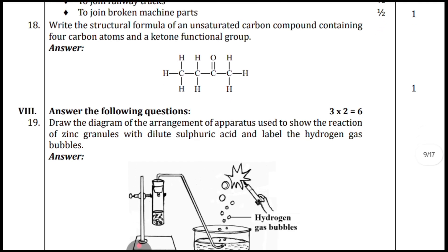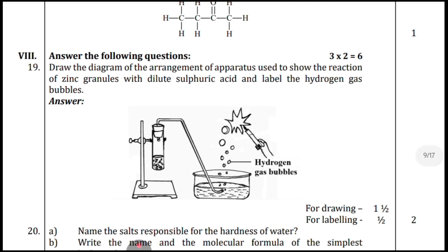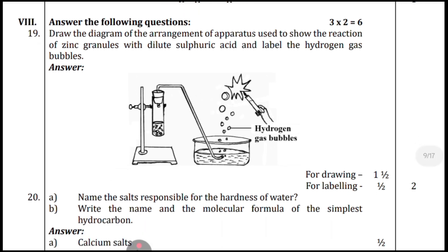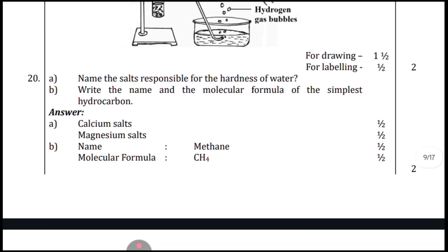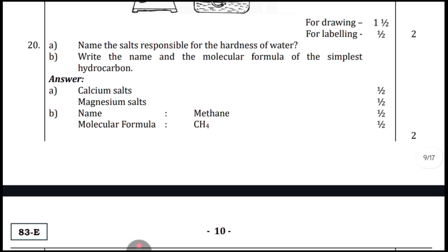Write the structural formula of an unsaturated carbon compound containing four carbon atoms and a ketone functional group — here is the correct answer. The next two-mark question: draw the diagram of the apparatus used to show the reaction of zinc granules with dilute sulfuric acid and label the hydrogen gas bubbles. For drawing the diagram: one and a half marks; for labeling: half a mark — total two marks.